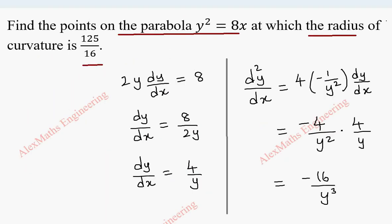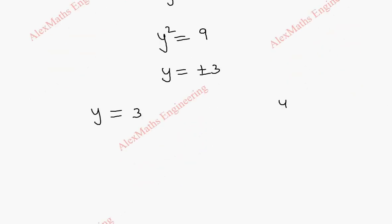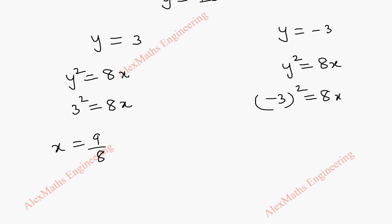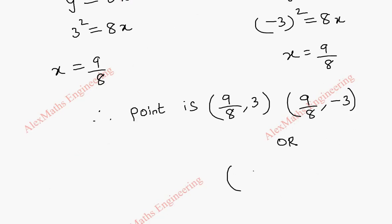We substitute y values into the curve equation y squared equals 8x. For y equals 3: 3 squared equals 8x, so x equals 9 by 8. For y equals minus 3: x is again 9 by 8. Therefore, the points are (9/8, 3) and (9/8, minus 3), which we can also write as (9/8, ±3).